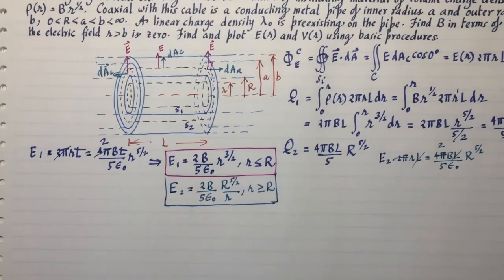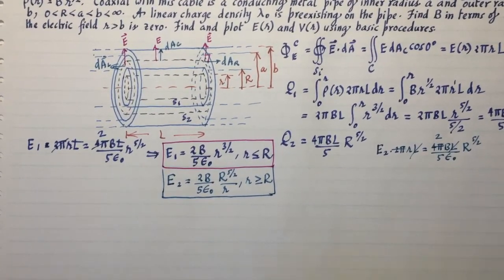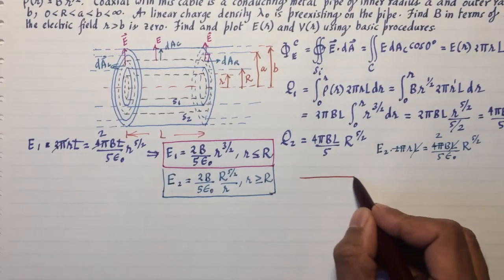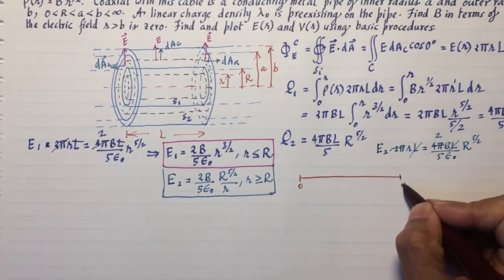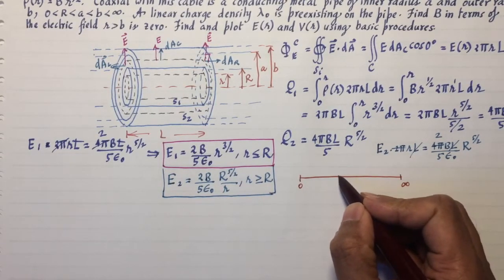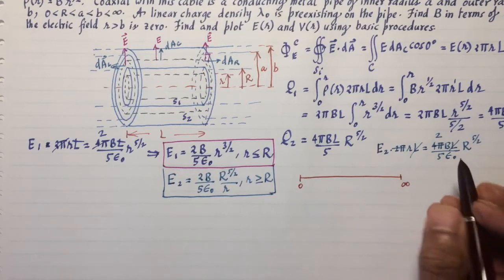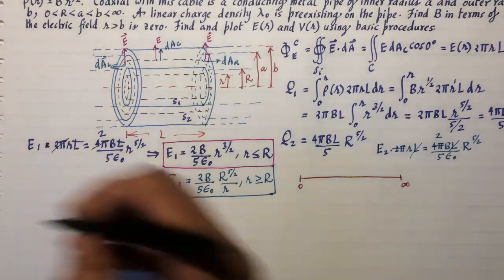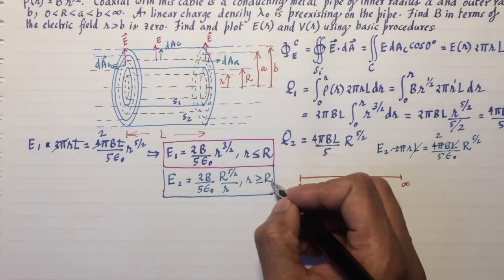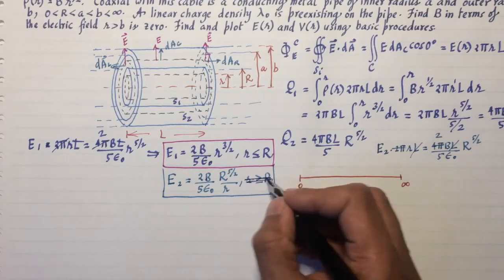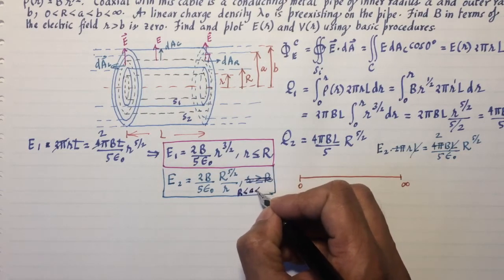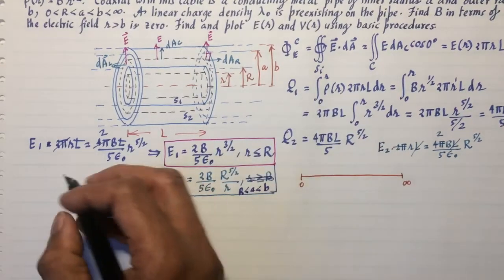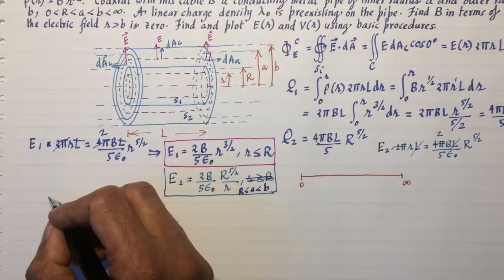The electric field for r bigger than R can be got by using q2 instead of q1. You'll notice that if I use q2 instead of q1, I'm just going to get a bunch of constants. So let me do that here. Use a little different color ink because I'm clashing with this calculation here. So E2 times 2πrL is equal to this one, 4πBL/(5ε₀) capital R^(5/2). This time, there'll be the usual cancellations of L and π's, but there will be no cancellation with R. So the electric field E2, which I'll write right below this one, is going to be 2B/(5ε₀) capital R^(5/2) over little r.